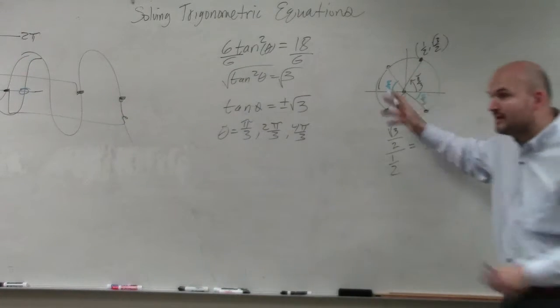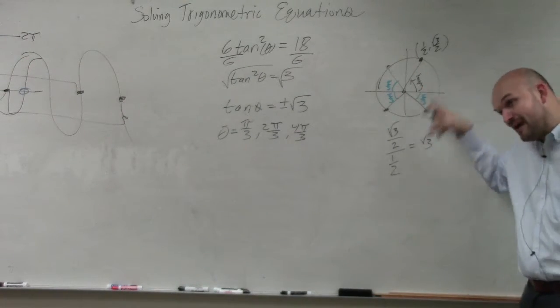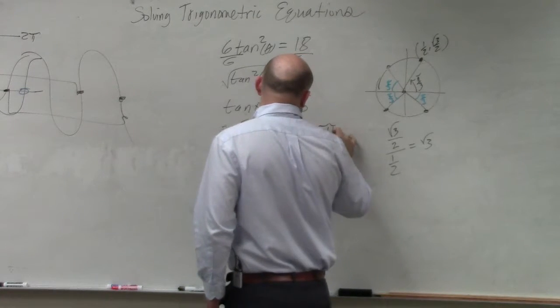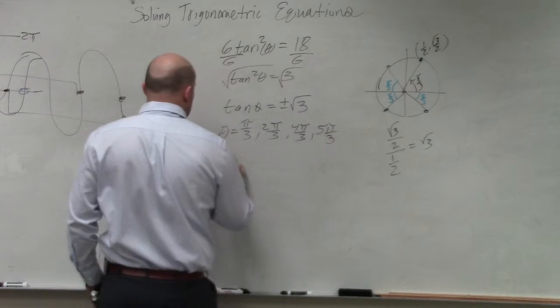So all the way around the circle is 6 pi over 3. And if I'm 1 pi over 3 short of 6 pi over 3, that means I'm at 5 pi over 3.